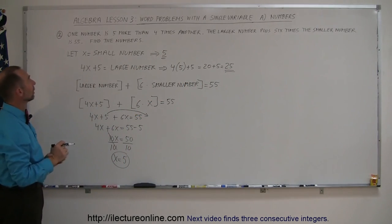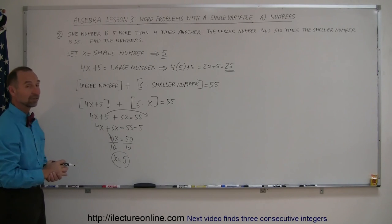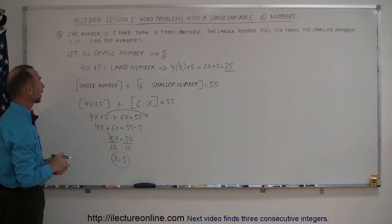The large number is 5 more than 4 times the small number, so there we go. That's how you do that one. If you'd like to see more examples, stay tuned for the next one.